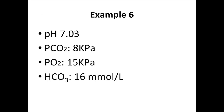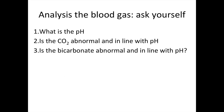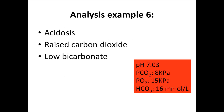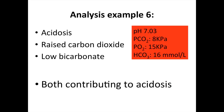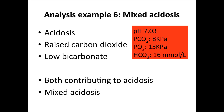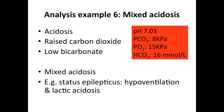The final example: the pH is acidotic, there is a raised carbon dioxide, and a low bicarbonate. Both of these are in line with the acidosis — and yes, that is also possible. In this case, both the raised carbon dioxide and the low bicarbonate are contributing to the acidosis. So this is what we call a mixed acidosis. An example could be status epilepticus, where you've got acidosis from lactate and acidosis from hypoventilation — both respiratory and metabolic systems contributing to the acidosis.